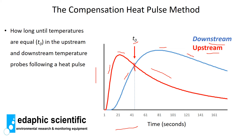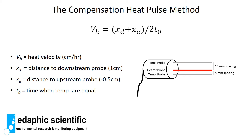The upstream temperature probe increases more rapidly simply because it is at a closer distance to the heater than the downstream probe — the heat isn't traveling faster, it's just closer. The compensation heat pulse equation is similar to high school physics: velocity equals distance divided by time. Distance is calculated as the sum of xd (distance to downstream probe) plus xu (distance to upstream probe, given a negative value). T0 is the time at which the downstream and upstream temperature curves intersect, and these values are put into the equation to get heat pulse velocity.